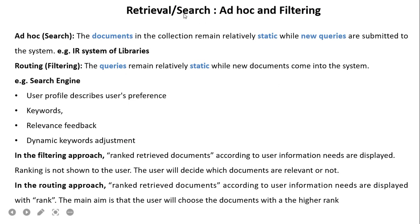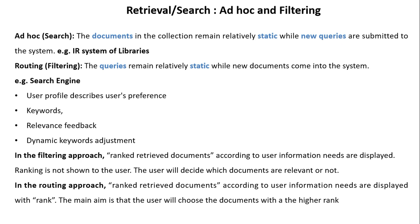Retrieval and search has two approaches: ad hoc and filtering. In ad hoc search, the documents in the collection remain relatively static while new queries are submitted to the system — for example, the IR system of libraries. In the routing and filtering approach, the queries remain relatively static while new documents come into the system — for example, a search engine. Search engines use techniques such as user profiling, keywords, relevance feedback, and dynamic keyword adjustment by local or global methods to achieve efficient retrieval.